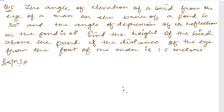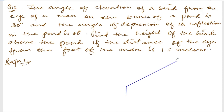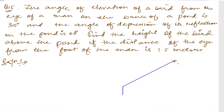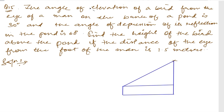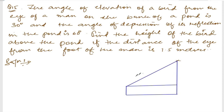So there is a man. Let us draw a man. He is looking at the bird, and this is a bird that is flying. The angle of elevation comes out to be this one, so let me draw the height of the bird and join these points. This angle comes out to be 30 degrees.